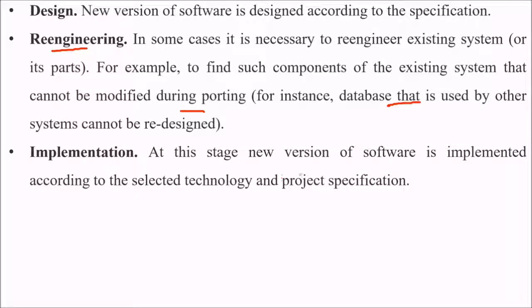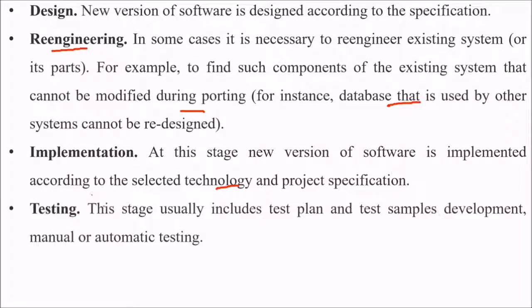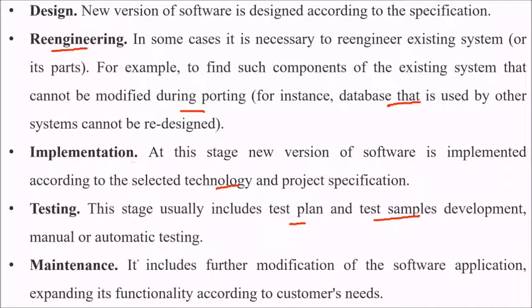Then implementation: the new version of the software is implemented according to the selected technology and project specification. And testing: this stage usually includes a test plan, test samples, and development of manual and automatic testing. Then maintenance: this includes further development or modification of the software application, expanding its functionality according to customer needs.